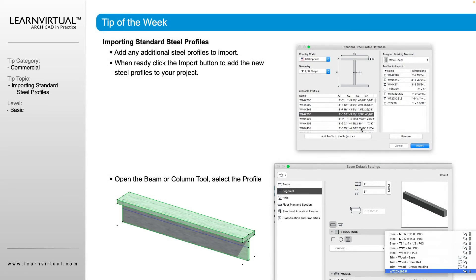Those profiles will be added as profile options within our Beam and Column tool. That's where it differs from a library object — this is a profile option within the tool itself. When we open up our Beam or Column tool and look at our segment structure options, we have three choices: a standard square where you can customize measurements, a circular beam, and structural profile beams — which include everything that comes with ArchiCAD plus any of the steel profiles we just imported.